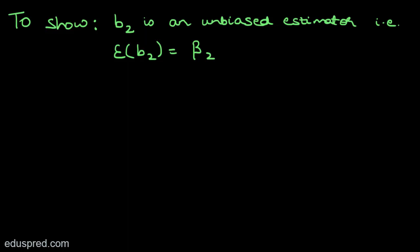Let's think in the repeated sampling framework. Assume that I have taken 500 different samples. For every sample I'm going to find one particular value of B2, so I will have many different values of B2 from these 500 samples. The property of unbiasedness says that if I take the average of all these values of B2, that average will be equal to the true population parameter beta2. To summarize, the property of unbiasedness means that the average value of B2 across many samples would approach the true parameter value beta2.